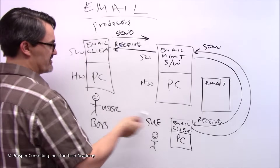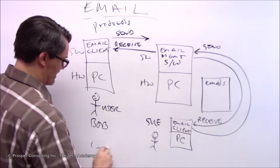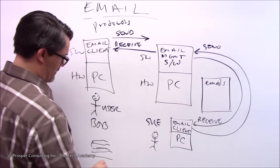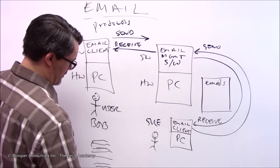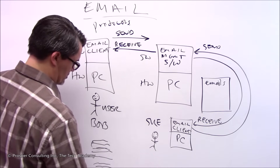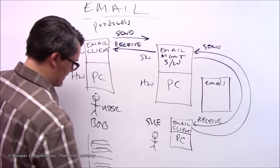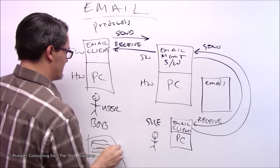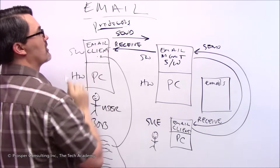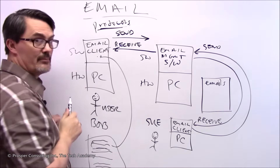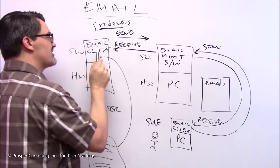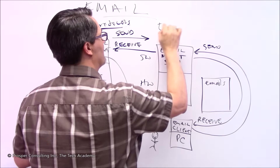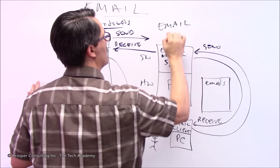Bob wants to send Sue an email. He goes onto his computer and types it up: To Sue, from Bob, subject: birthday party. Here are the directions to get to the birthday party — please bring chocolate cake. No attachments. He types all this up, and the email client takes all that data, formats it according to the protocol for sending email, and then sends it. He does not send it directly to Sue.